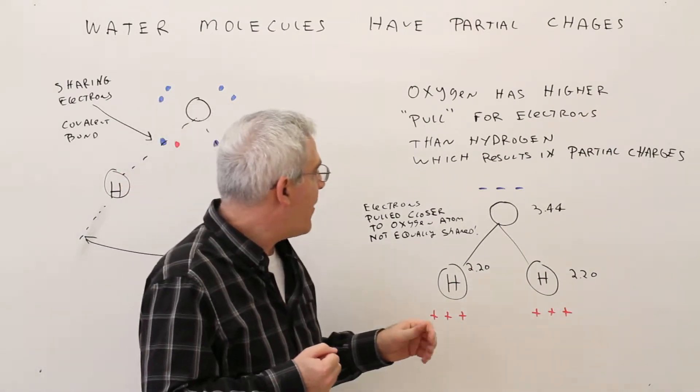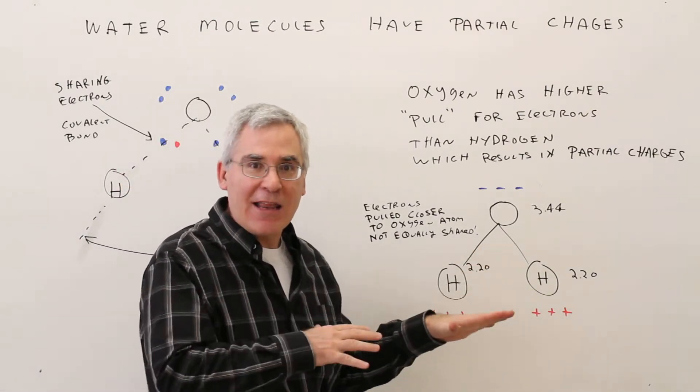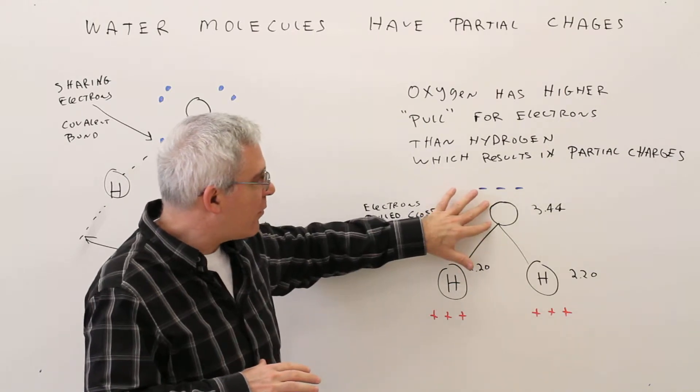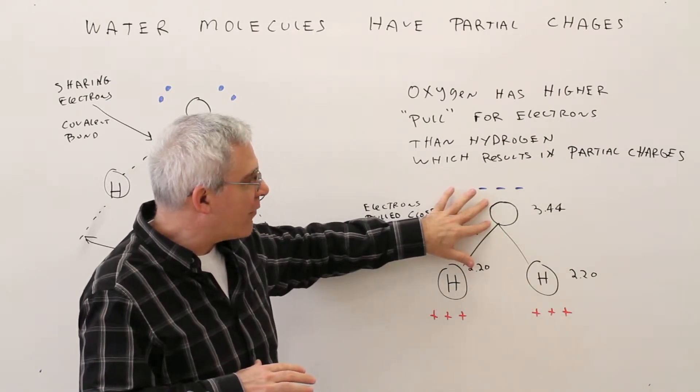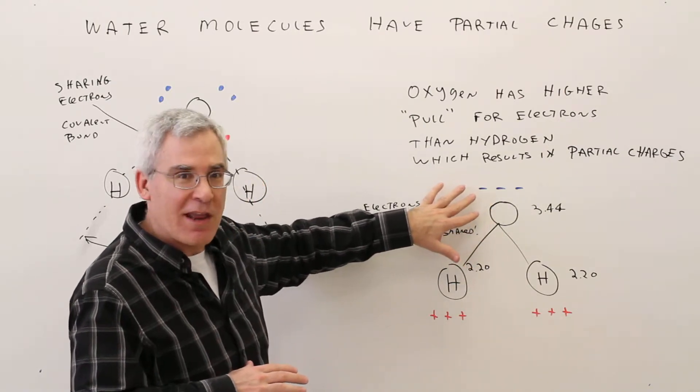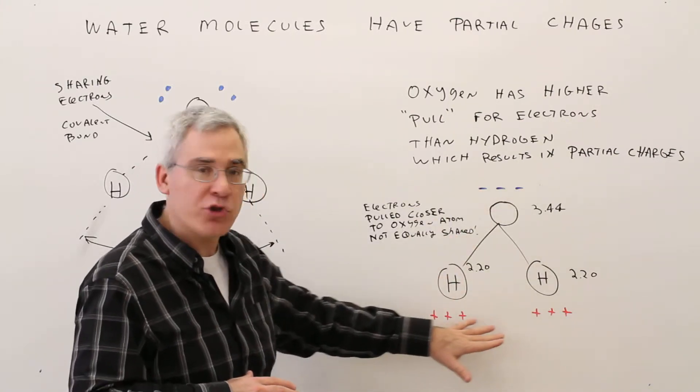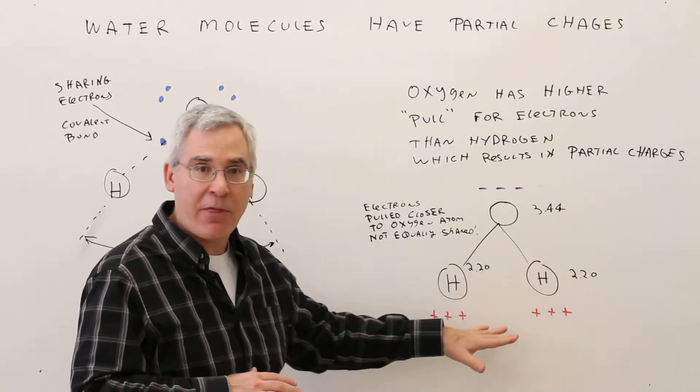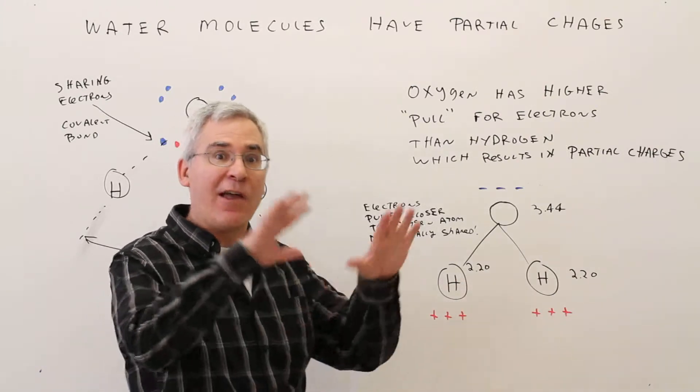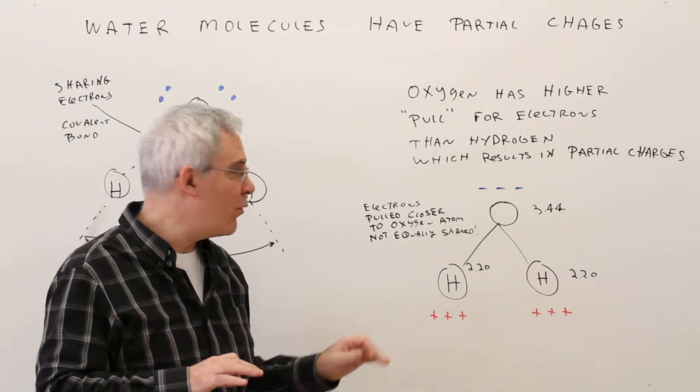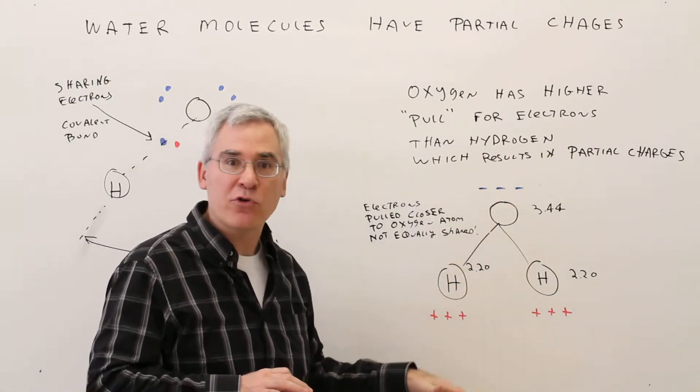So the electrons are not equally shared. They're closer to the oxygen atoms which results in a partial negative charge on this side of the molecule and a partial positive charge on the other side of the molecule. The entire molecule is electrically neutral but it just has these partial differentials.